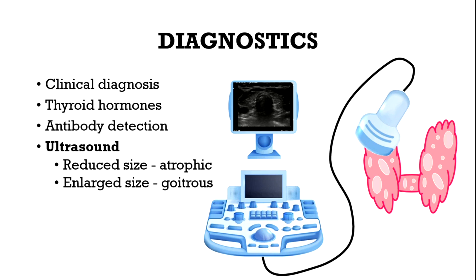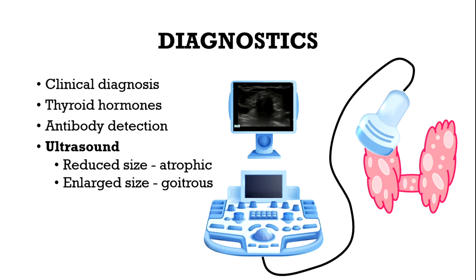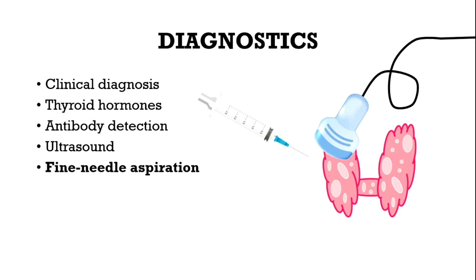If the thyroid size is reduced, which is mainly observed, we speak about an atrophic phenotype. If a heterogeneous enlargement is found, it's called a goitrous phenotype. Last but not least, a fine needle aspiration may be done to exclude malignancies or a lymphoma.